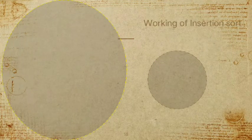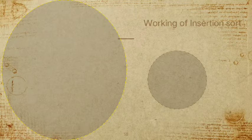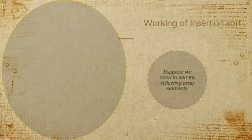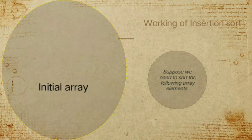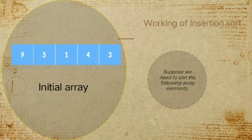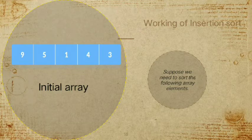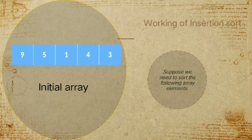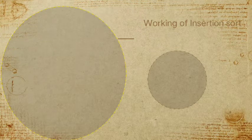Let's see the working of insertion sort. Suppose we need to sort the following array elements. Our initial array values are: 9, 5, 1, 4, and 3. We will proceed step by step through this example.